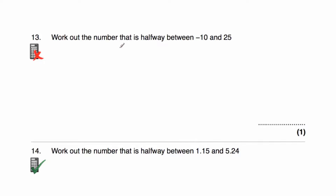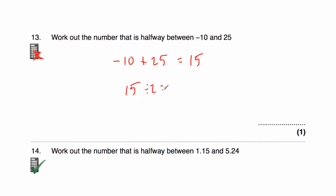Question thirteen says: work out the number that's halfway between negative 10 and 25. So negative 10 plus 25: adding 10 brings us to 0, and we've got 15 left, so that's 15. Negative 10 plus 25 is 15. If we take our 15 and divide by 2, that gives us 7.5.